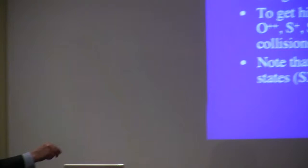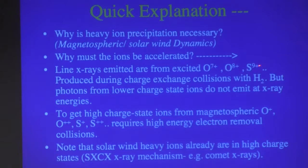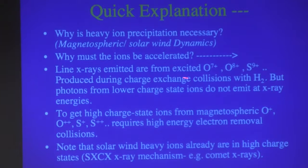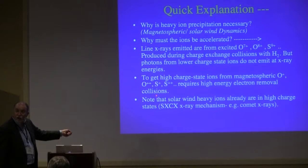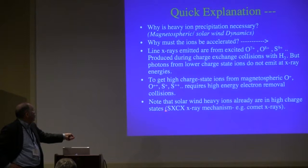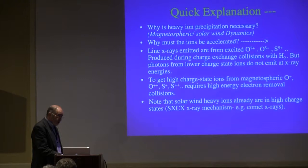Line X-rays are emitted from excited O7+, O8+, sulfur 9+ — these high charge states, when they interact, will produce X-rays and line emission. They're produced during charge exchange collisions with H2, or any other neutral, but H2 is what's in the atmosphere of Jupiter. Photons from lower charge states will emit radiation, but not in the X-ray regime — it'll be in ultraviolet. To get high charge state ions from the magnetosphere, you need high-energy electron removal collisions with H2. That's the key. Note that solar wind heavy ions are already in high charge states — that works at comets. So if you did manage to get enough of these into the cusp, that would do the job, but then you'd get a lot of protons too.